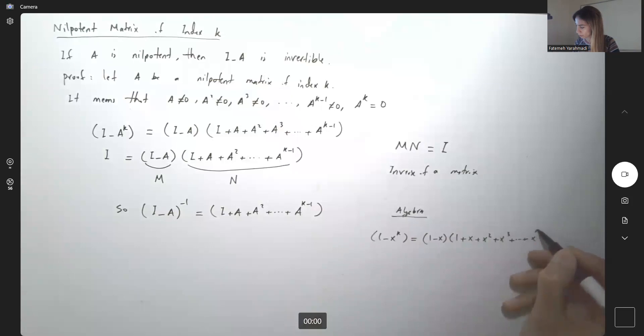This is just basic algebra that we learned before. For example, 1 minus X squared is 1 minus X times 1 plus X or 1 minus X cubed follows and 1 minus X to the fourth follows and so on.